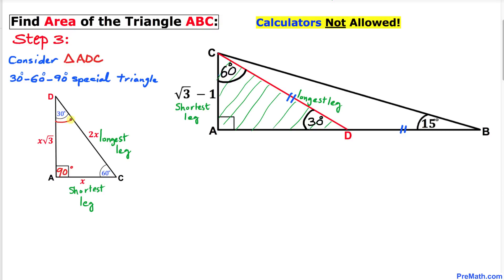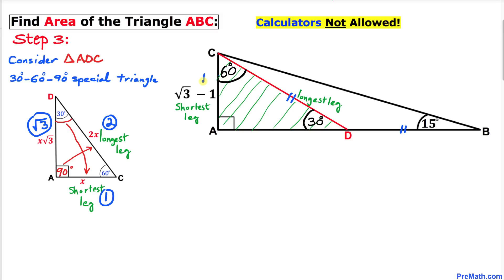In a 30-60-90 triangle, the 30-degree angle is the smallest, so the side opposite to it is the shortest leg. The 90-degree angle is the largest, so the side opposite to it is the longest leg (the hypotenuse). If the shortest leg is 1 unit, the longest leg (hypotenuse) is 2 units, and the remaining leg is √3. So in our triangle ADC, the shortest side is 1, the longest is 2, and the remaining side is √3.